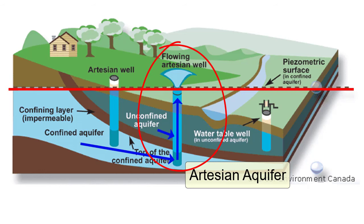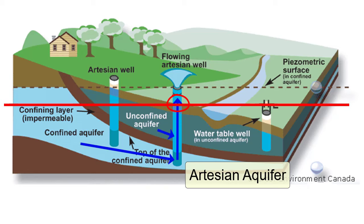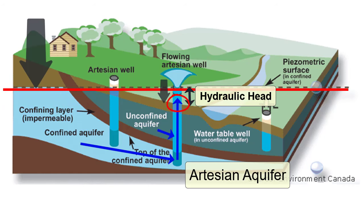A third well was drilled in between the first two, also down through the unconfined aquifer and into the confined one. Its surface sits below the water table of the confined aquifer, so as soon as this well is drilled, water will automatically start pouring out of the ground under high pressure and will continue to do so until the water table of the confined aquifer drops below this level. What's making the water flow? The hydraulic head. The pressure on the left at the water table is higher than the pressure at the surface, pushing the water up the well and out onto the surface.